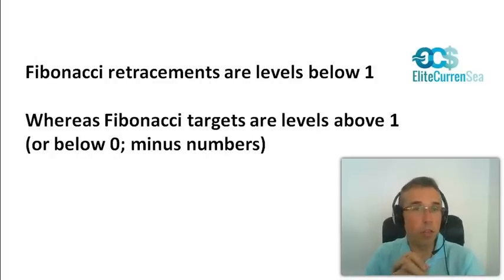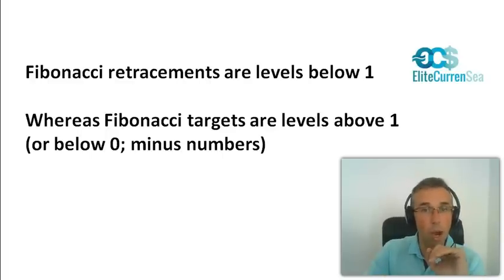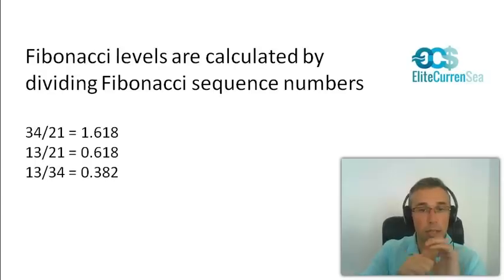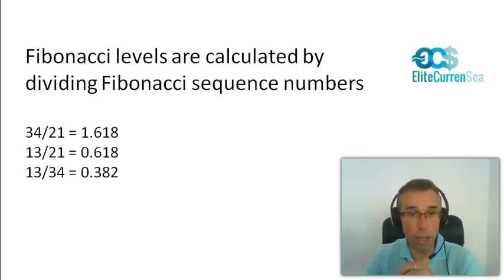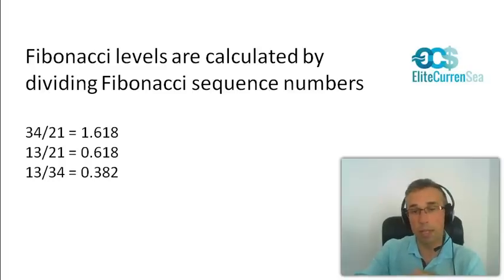Now, the Fibonacci retracement levels, there are basically two types of levels. You've got retracements and targets. The retracements are levels below 1, for instance, the 0.618. That is a retracement level. Same thing for 0.382. But everything above 1, or actually below 0, something we'll explain later on in a different video, is a target. 1.618, therefore, is a target.